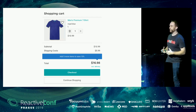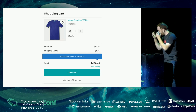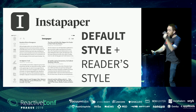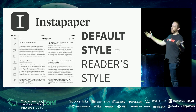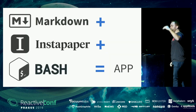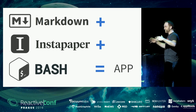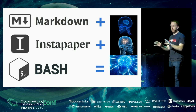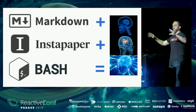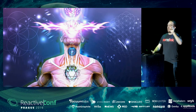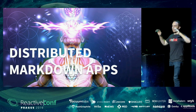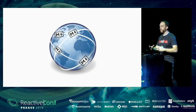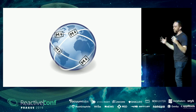But wait — as my shopping cart gets more complicated, the styles get more complicated. How am I going to deal with all these different styles? That's a lot more than markdown can handle. But then I remember my Instapaper idea with default styles and reader styles — all these ideas are coming together. If I put markdown, Instapaper, and bash together, I can build a whole app. This is a great stack. And then I get the galaxy-brain amazing idea: this is not only good for me, this is good for everyone. This is the future. It needs a name — this is going to be 'Distributed Markdown Apps,' and it's going to take over the world. People all over the planet will be building these things. It's going to revolutionize the way software is built.